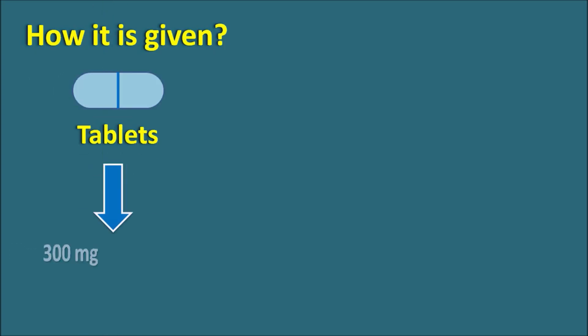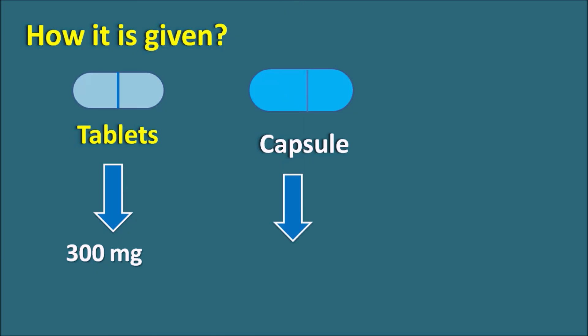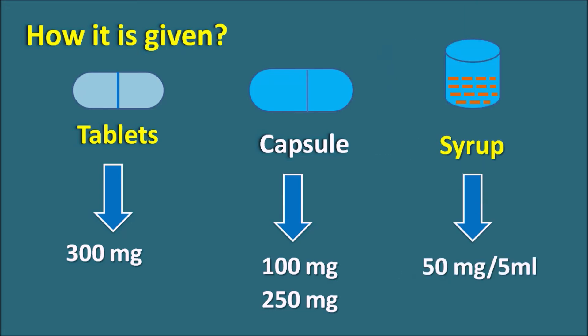Zidovudine is given as a tablet at 300 mg, or as capsules at 100 mg or 250 mg. It is also available as a syrup at 50 mg per 5 ml and in injectable form. For treatment of HIV infection, it is given at 300 mg twice daily in combination with other drugs. For prevention of mother-to-baby HIV transmission, the dose depends on the stage: whether it is used prepartum, intrapartum, or postpartum.